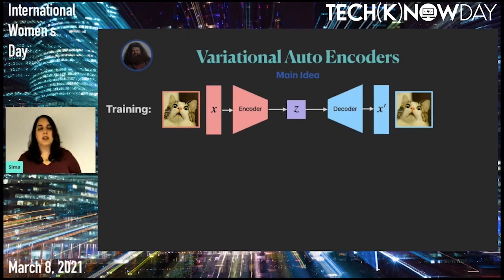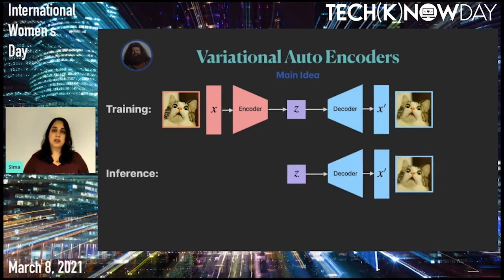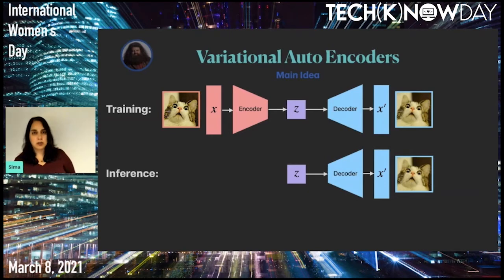In training, we train the encoder and decoder together to reconstruct the image given the regularization. In inference, we just randomly sample Z and use the decoder to generate images.